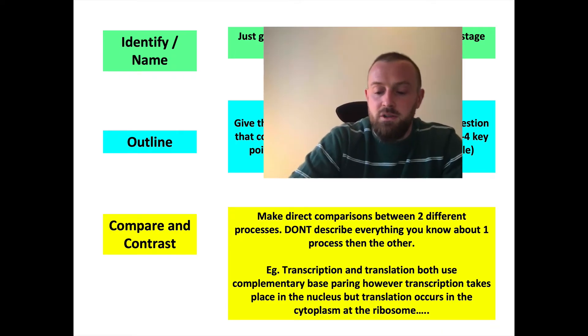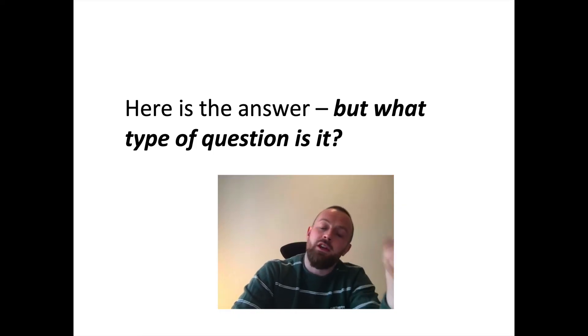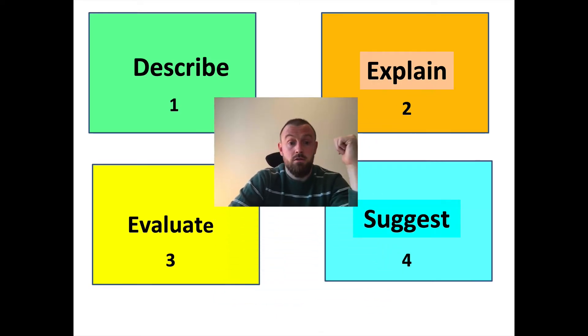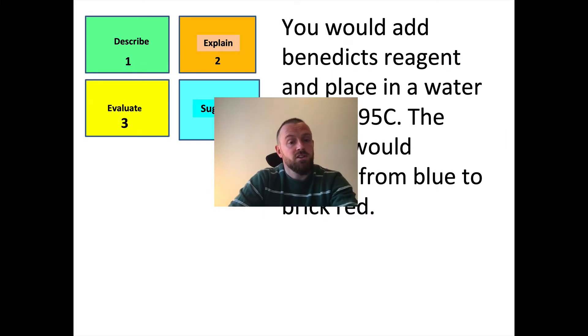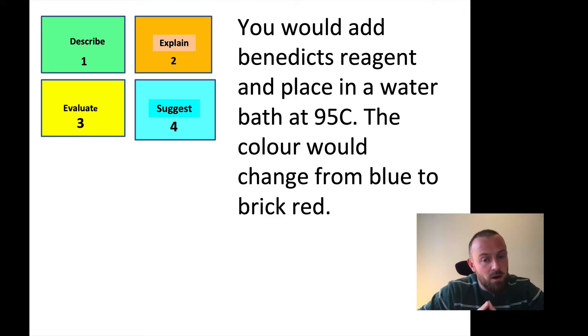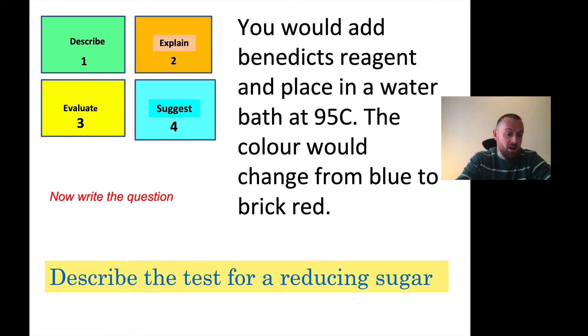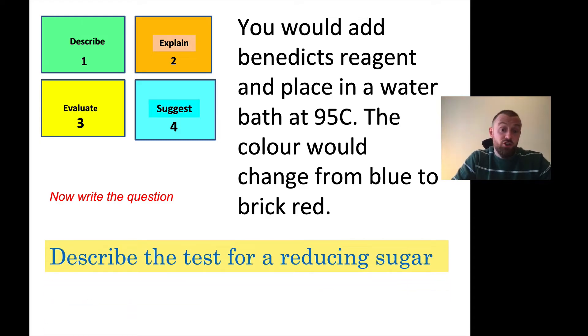OK, so let's play with these definitions a bit now. I'm going to give you the answer, but I want you to think about what type of question was asked. You've got four choices: describe, explain, evaluate or suggest. Let's get into it. See how many you get right. So first, here's the answer: you would add Benedict's reagent and place in a water bath at 95 degrees C. The colour would change from blue to brick red. By the way, these are all about AS biology, all these examples. So which one do you think it is? Yes, that one is a describe. But what would be the question? Pause the video and have a think. Could you write a question that would have this as the answer? Here it is: describe the test for reducing sugar. Let's do some more.